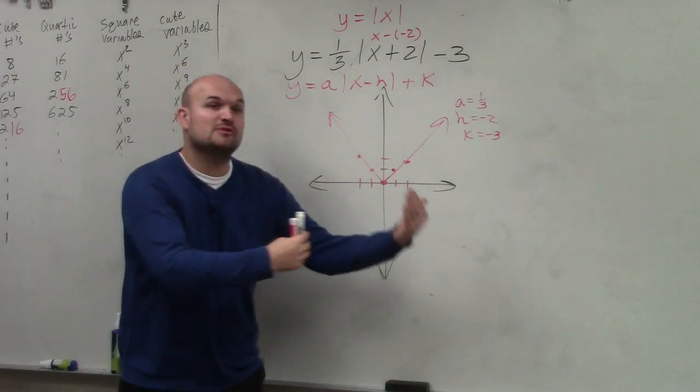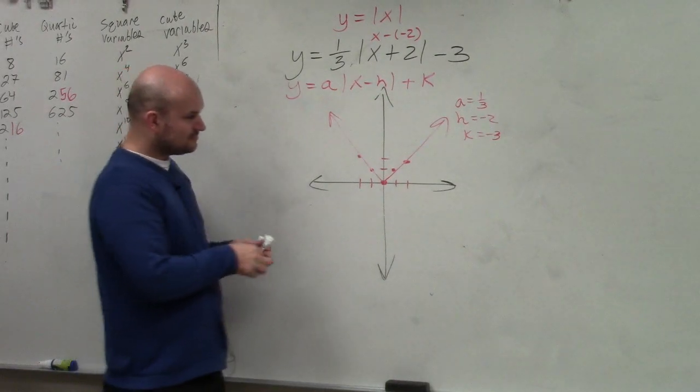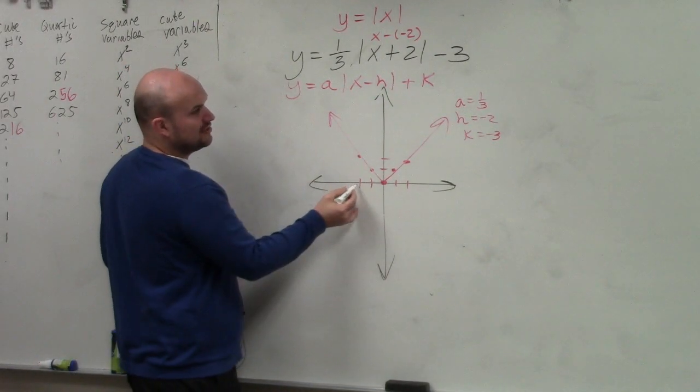Since h is negative 2, I'm shifting to the left. Remember, it's always the opposite when it's inside the function. So I'm going left 2, down 3.